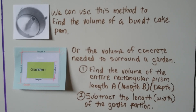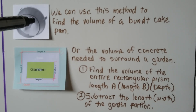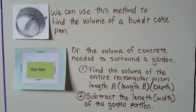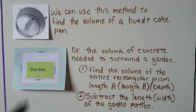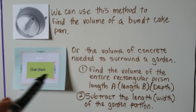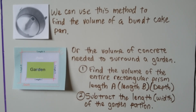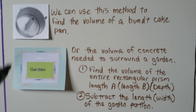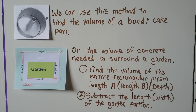We can use this subtraction method to find the volume of a Bundt cake pan — find the volume of the entire cylinder and subtract the cylinder in the middle. Similarly, to find the volume of concrete needed to surround a garden, find the volume of the entire rectangular prism using length A, length B, and depth, then subtract the length and width of the garden area to find how much concrete is needed.